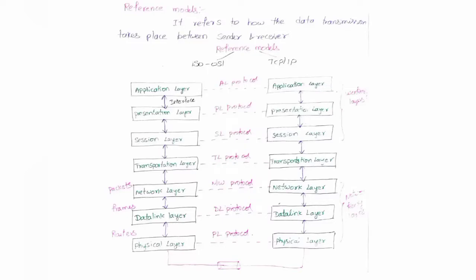Hello everyone, welcome to my channel. In this video we will be learning about the reference models. There are two types of reference models: the ISO OSI model and the TCP/IP model. The OSI model was introduced first in network architecture, then the TCP/IP model came into existence. The TCP/IP protocol is the dominant commercial architecture because it was used and tested extensively on the internet, but the OSI model was never fully implemented.